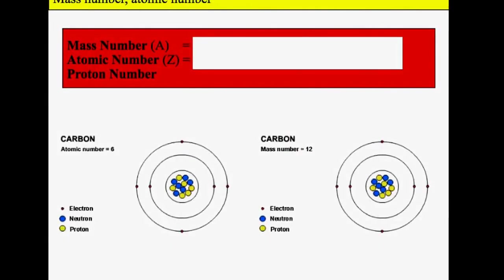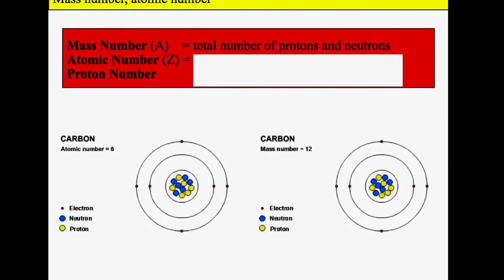Two key terms: mass number and atomic number. Mass number is the total number of protons and neutrons. For example, carbon has six protons, and this particular isotope of carbon has six neutrons, so it's got a mass number of 12.